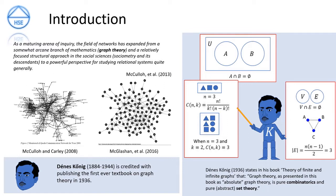Ian McCullough's work really helped me understand network theory and social network analysis. He states in his 2013 book 'Social Network Analysis with Applications' that the field of networks has expanded from a somewhat arcane branch of mathematics — i.e. graph theory — and a relatively focused structural approach in the social sciences — i.e. sociometry — to a powerful perspective for studying relational systems quite generally.